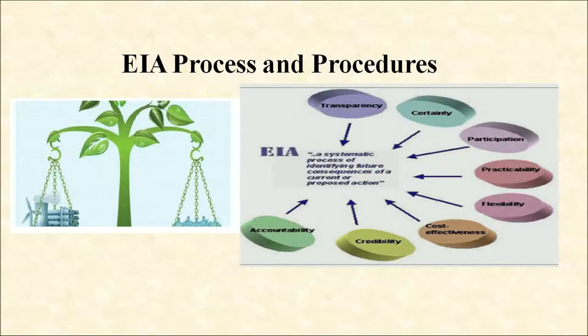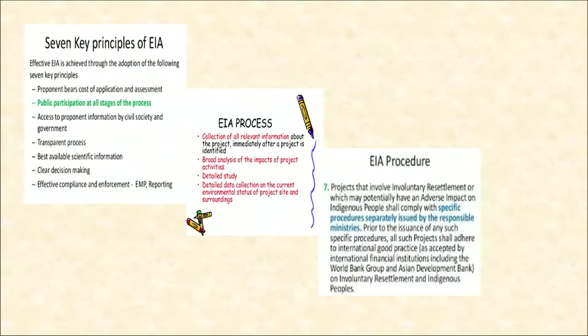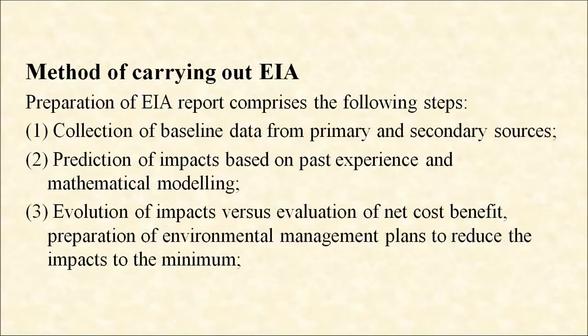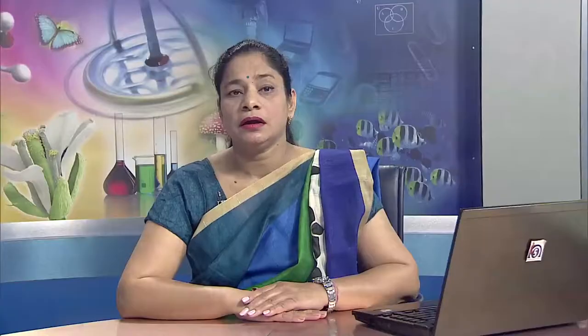EIA procedures and processes have several components, each separately considered. Preparation of the EIA report comprises the following steps: collection of baseline data from primary and secondary sources, prediction of impact based on past experiences and mathematical modelling, evaluation of impact versus evaluation of net cost-benefit, preparation of environmental management plans to reduce impact to the minimum, and quantitative estimation of financial cost of the monitoring plan and mitigation measures.